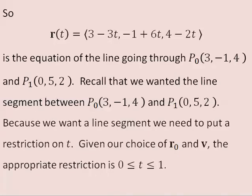So we have the equation of the line going through p-naught and p-one. Recall that we wanted the line segment between p-naught and p-one. Because we want a line segment, we need to put a restriction on t. Given our choice of r-naught and v, the appropriate restriction is that t will go between 0 and 1.